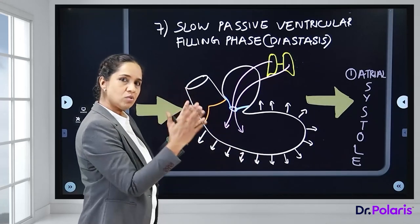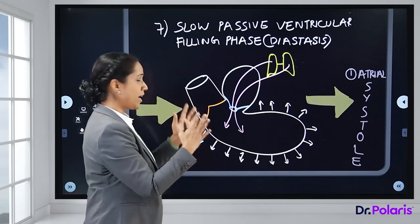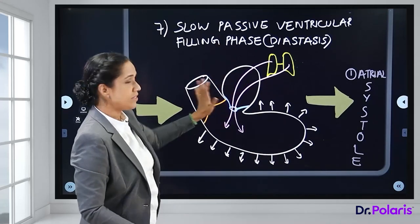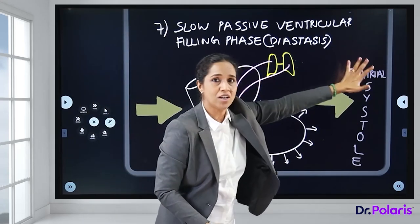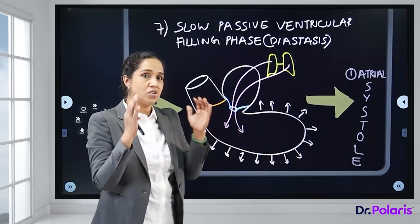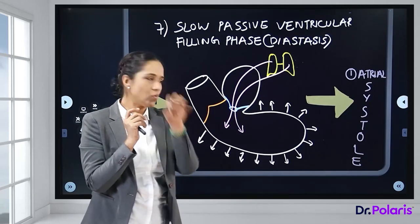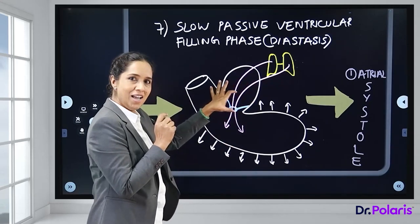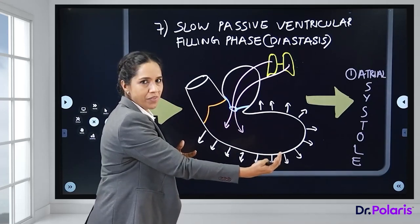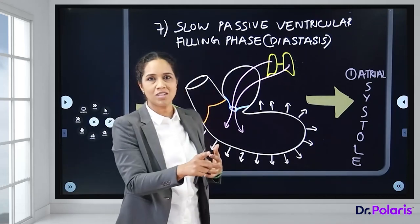After Phase 7, the atria goes back into systole — the first figure repeats. When the atria contracts, it ejects the remaining 20% of blood into the ventricle, which at this point is 80% filled. This completes the cardiac cycle, and the cycle continues.